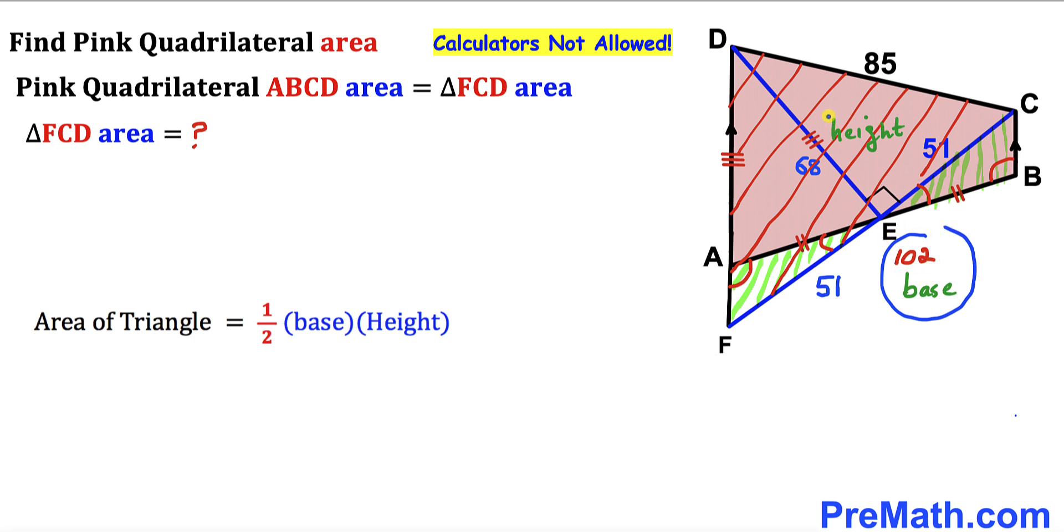And the height of this triangle FCD is 68. Let's go ahead and fill in the blanks in this formula. So we got one-half times our base is 102 times our height is 68.